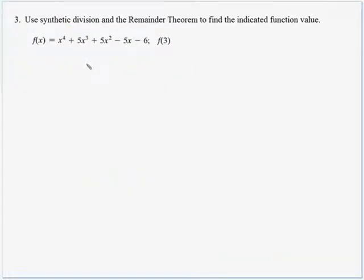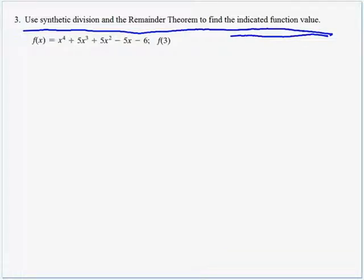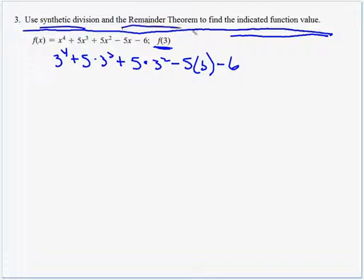Okay, number three. Use synthetic division and the remainder theorem to find the indicated function value. All right, we see this f of 3, and probably a lot of people immediately want to say, well, I'm going to evaluate at 3. That's going to be 3 to the fourth plus 5 times 3 cubed plus 5 times 3 squared minus 5 times 3 minus 6. And you could do it that way, but that's not what the directions asked for. They want us to use synthetic division and the remainder theorem to find this same answer.